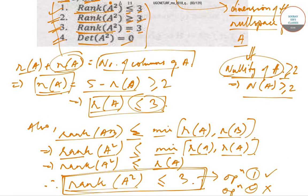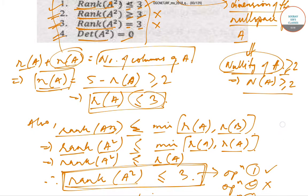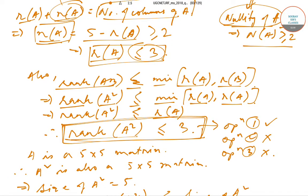Option 1 states rank(A²) ≤ 3, so Option 1 is correct. Option 2 states rank(A²) ≥ 3, which is incorrect. Option 3 states rank(A²) = 3, which is also incorrect.